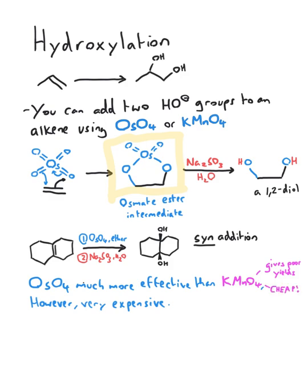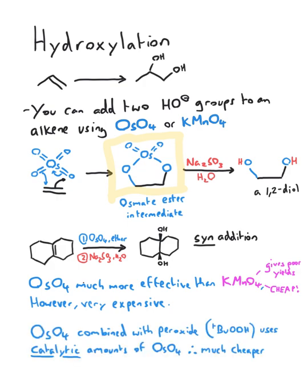More recently — about 15 years ago — osmium tetroxide was found to be catalytic in the presence of tert-butyl peroxide, or pretty much any other peroxide. This means that even though osmium tetroxide itself is expensive, we have cut the cost as we only need catalytic amounts of it anymore. Therefore, if you plan on putting two hydroxides where you used to have an alkene, then osmium tetroxide — OsO4 — is the chemical you should think of.